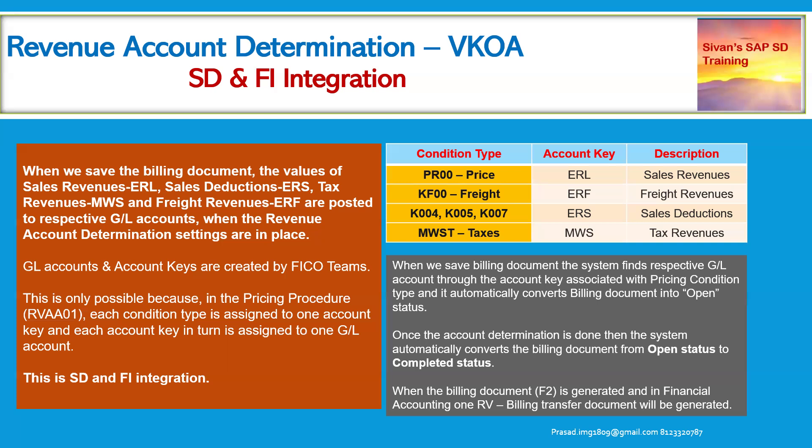We know what pricing elements are available in the pricing procedure: pricing elements like PR00 for prices, KF00 for rates, discount condition types like K004, K005, and K007 with account key ERS, and MWSC for taxes. When we save the billing document, the system finds the respective GL account through the account key associated with the pricing condition type, and it automatically converts the billing document into open status. Once account determination is done, the system automatically converts the billing document from open status to completed status.